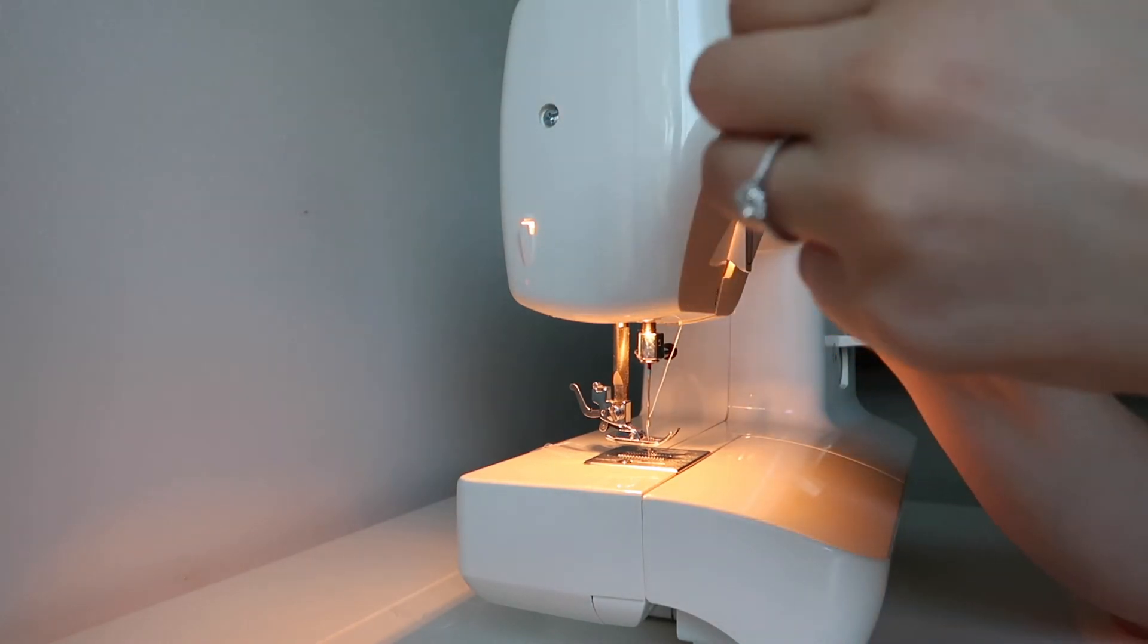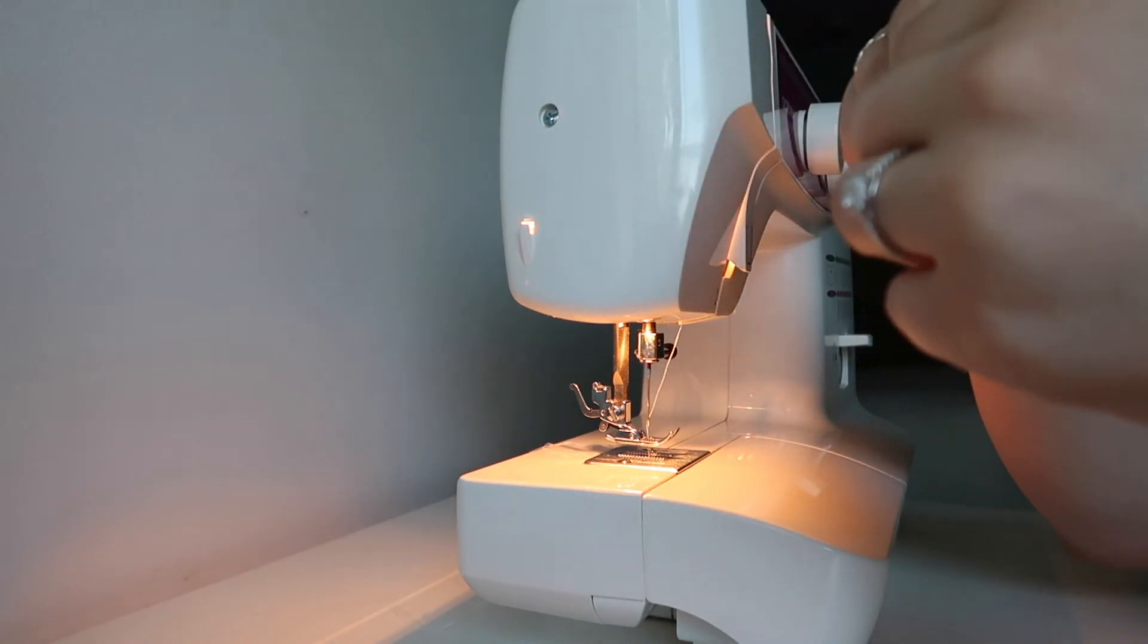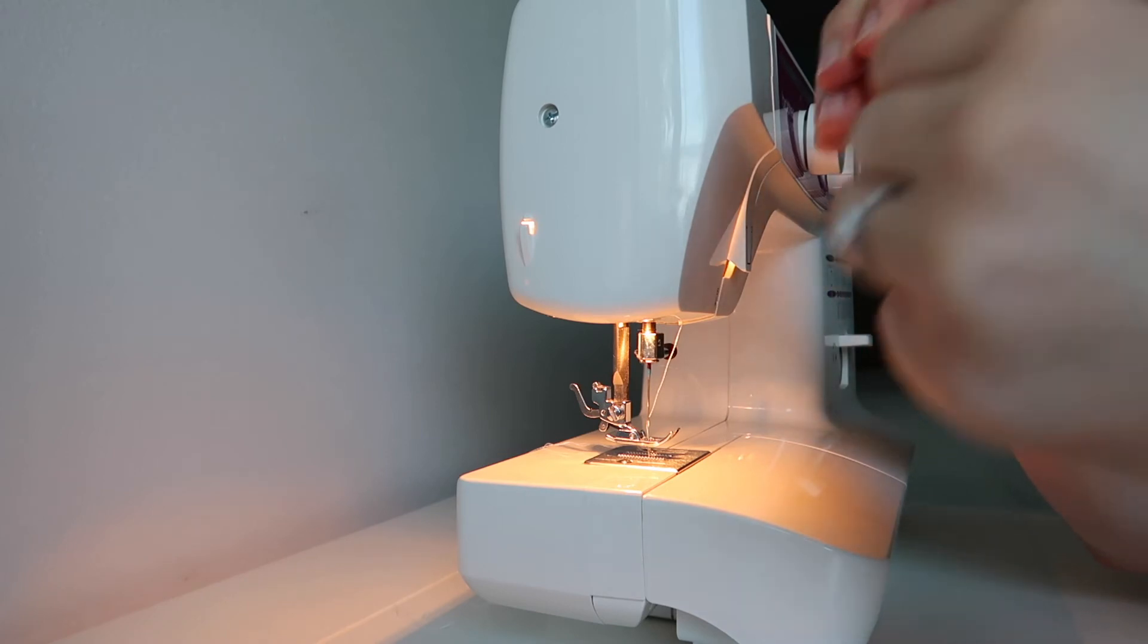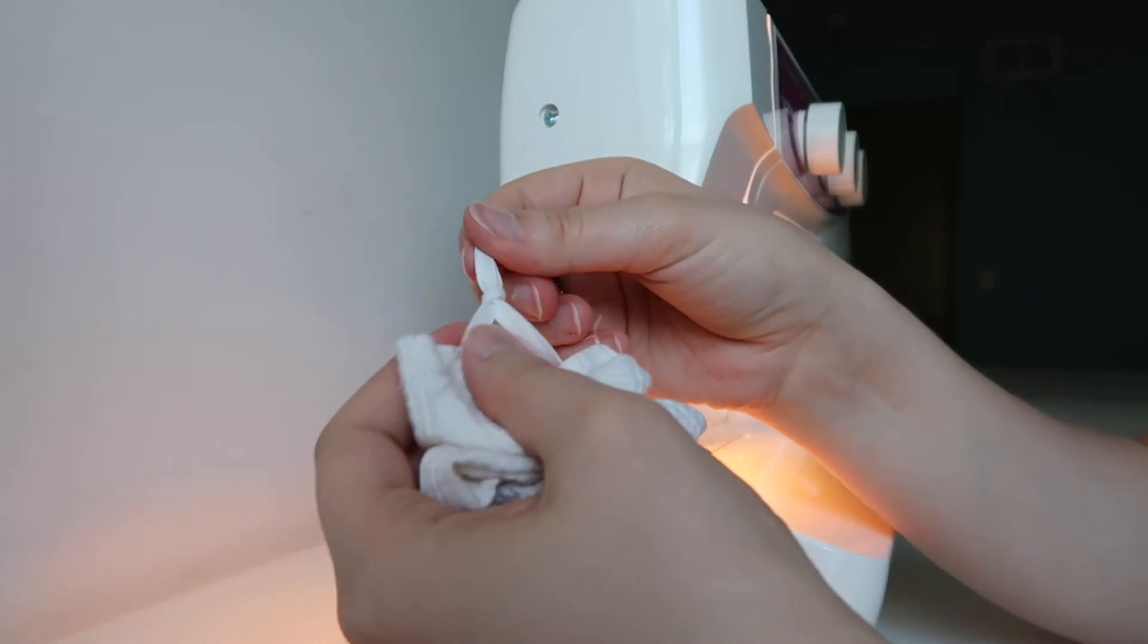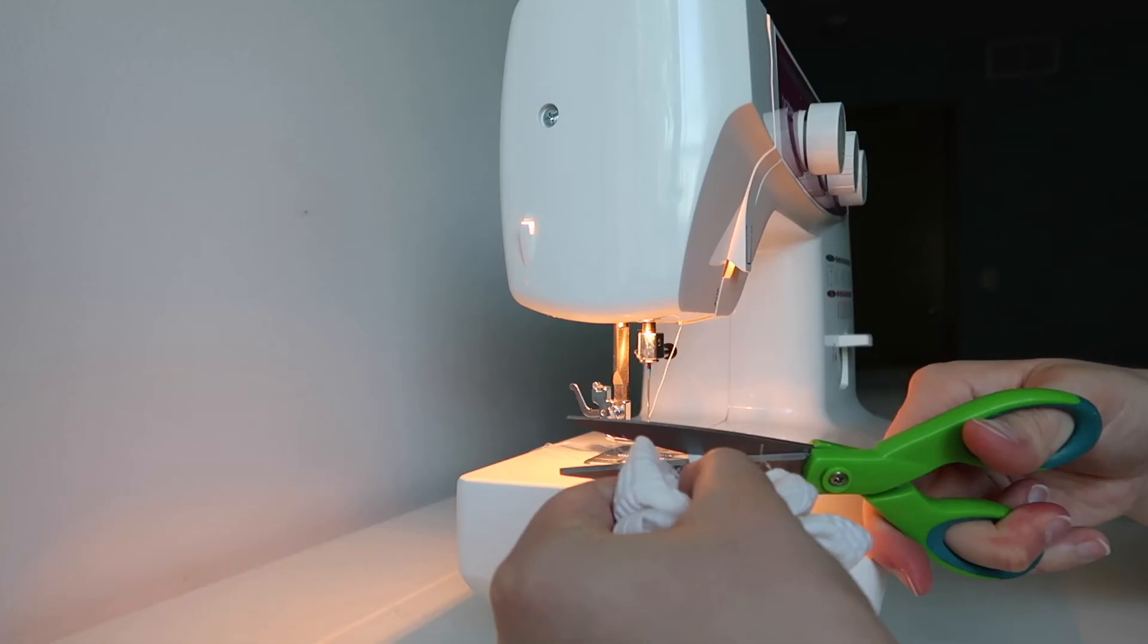But if you have really thick hair or you want a slightly looser scrunchie, you can tie the knot closer to the edge. Trim off any excess elastic if you have any.